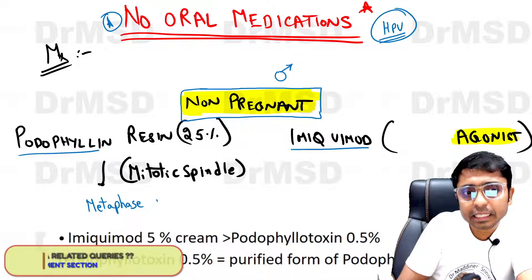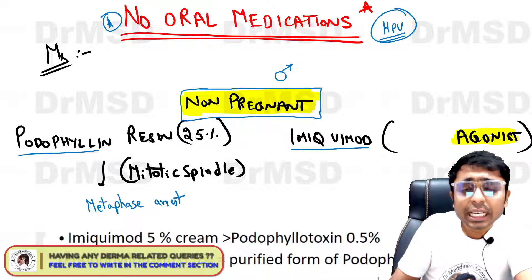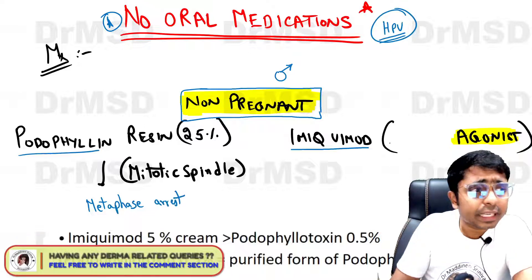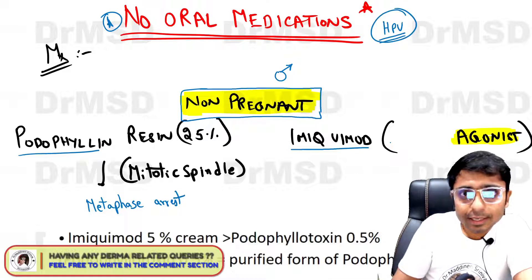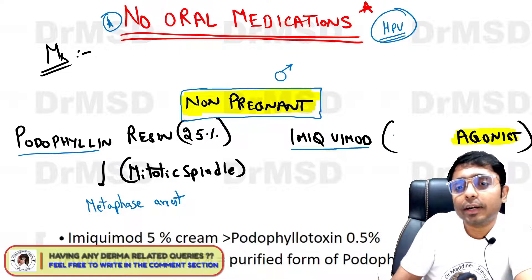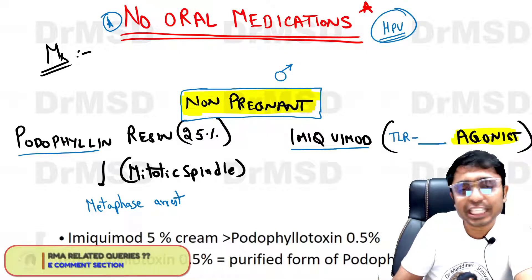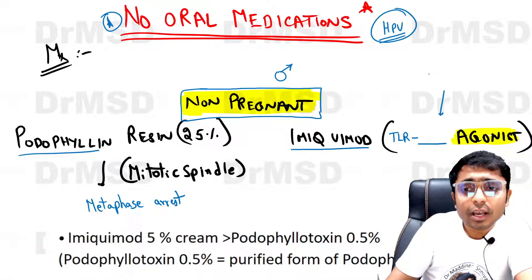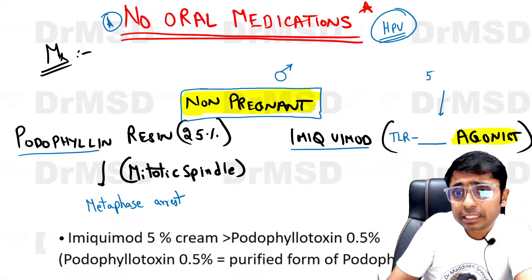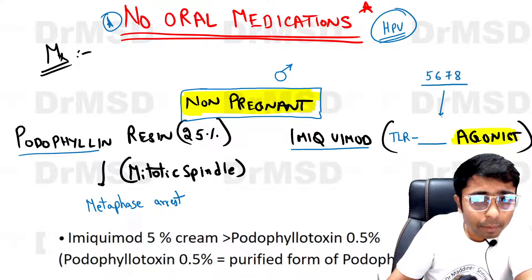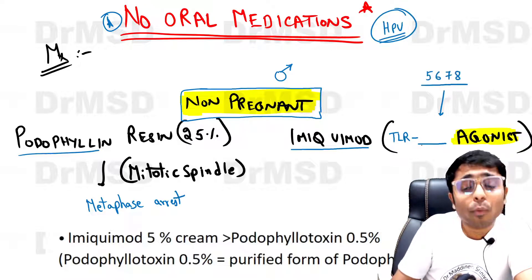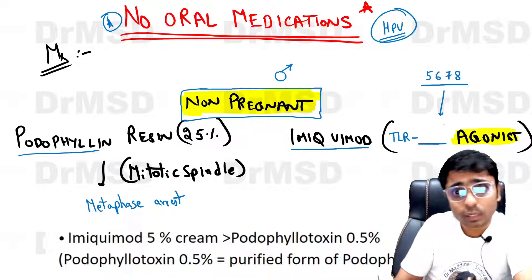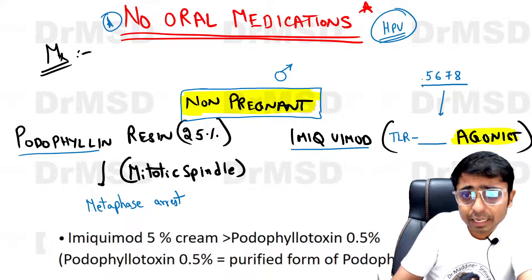Imiquimod is an immunomodulator that acts as a toll-like receptor agonist. I want all of you to comment on what the receptor number is — the options are five, six, seven, or eight. Please put your answer in the comment section.